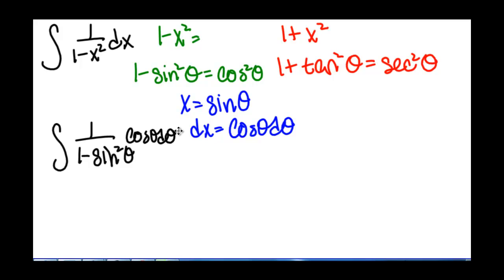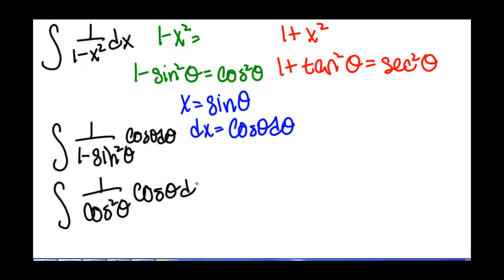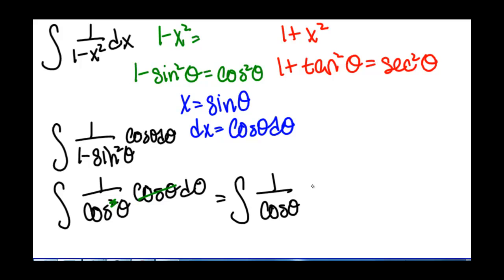We remember that 1 minus sine squared of theta is equal to cosine squared of theta. So this is the integral of 1 over cosine squared of theta times cosine of theta d theta. This cosine of theta cancels out one of the cosine of thetas in the bottom, so we're left with the integral of 1 over cosine of theta d theta, which is the integral of secant of theta d theta.